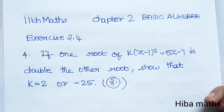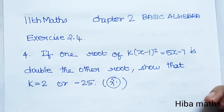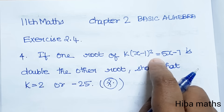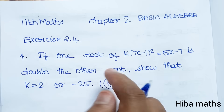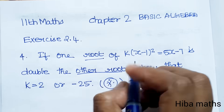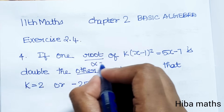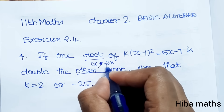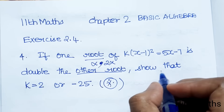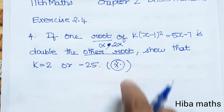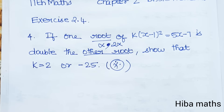Hello students, welcome to Hibamax 11th standard, Chapter 2 Basic Algebra, question 2.4, 4th question. If one root of k(x-1)² = 5x-7 is double the other root, show that k is equal to 2 or minus 25. This is a very important question that appeared in the government question paper in 2018 and in June 2019.